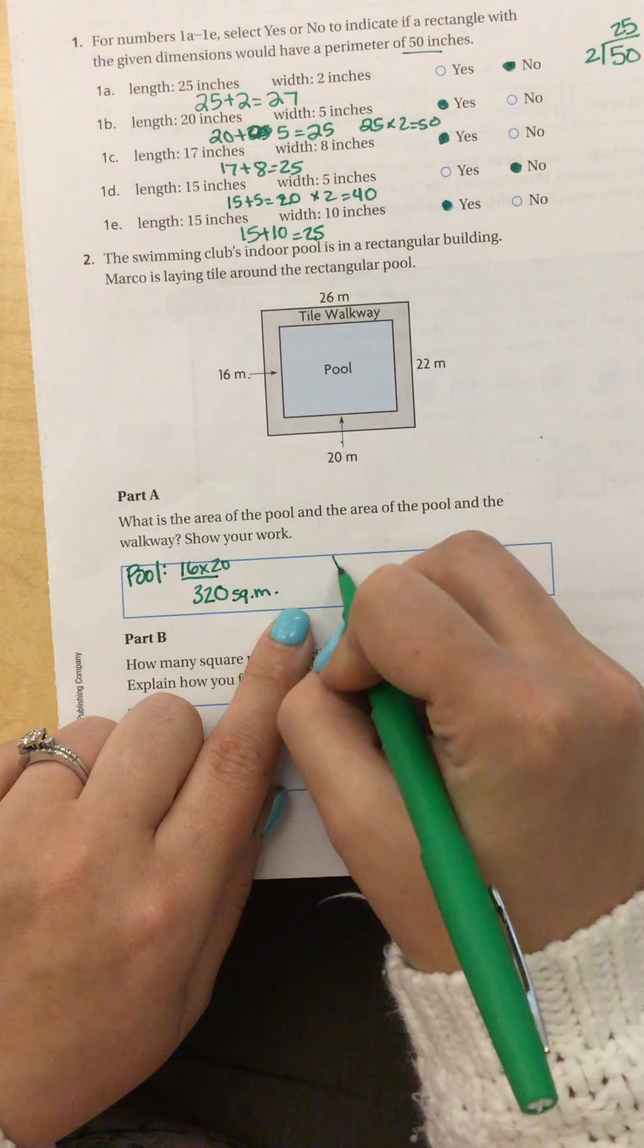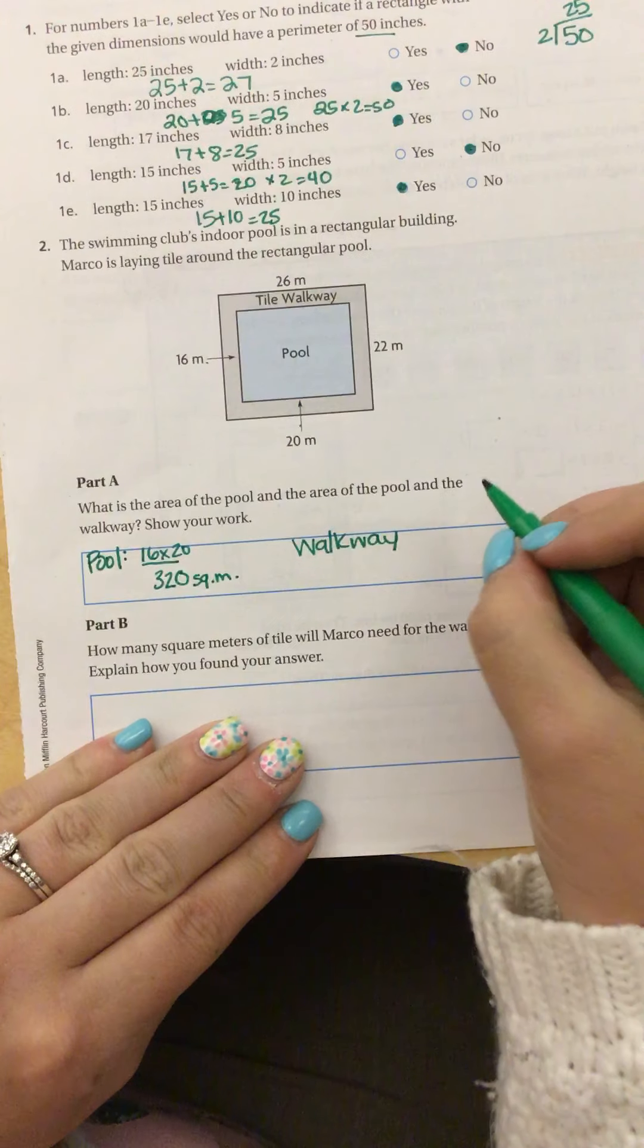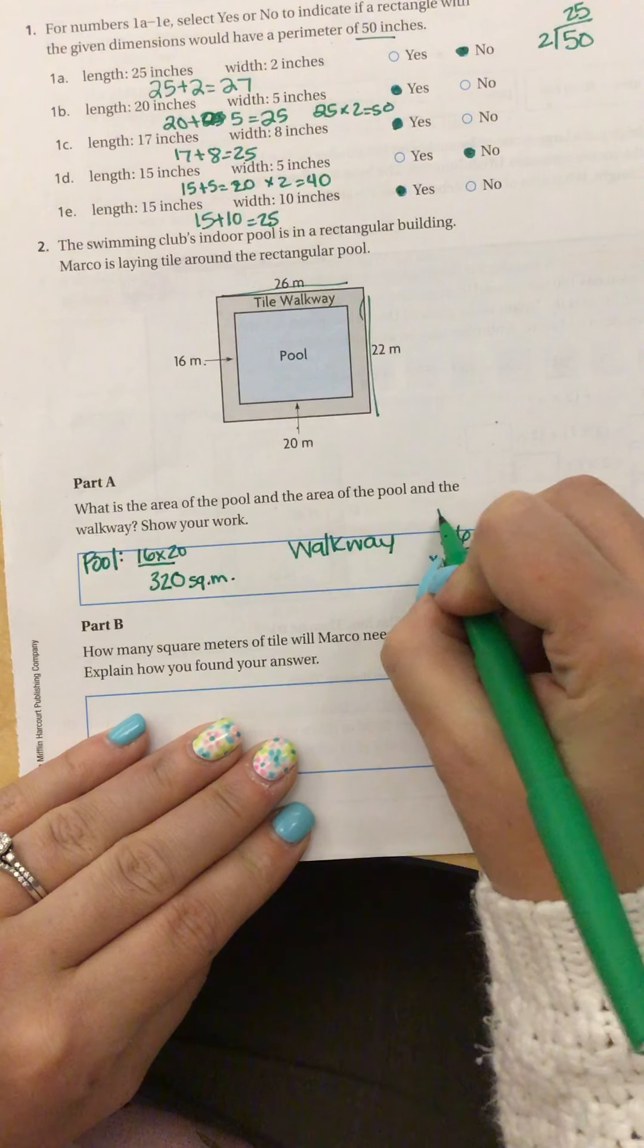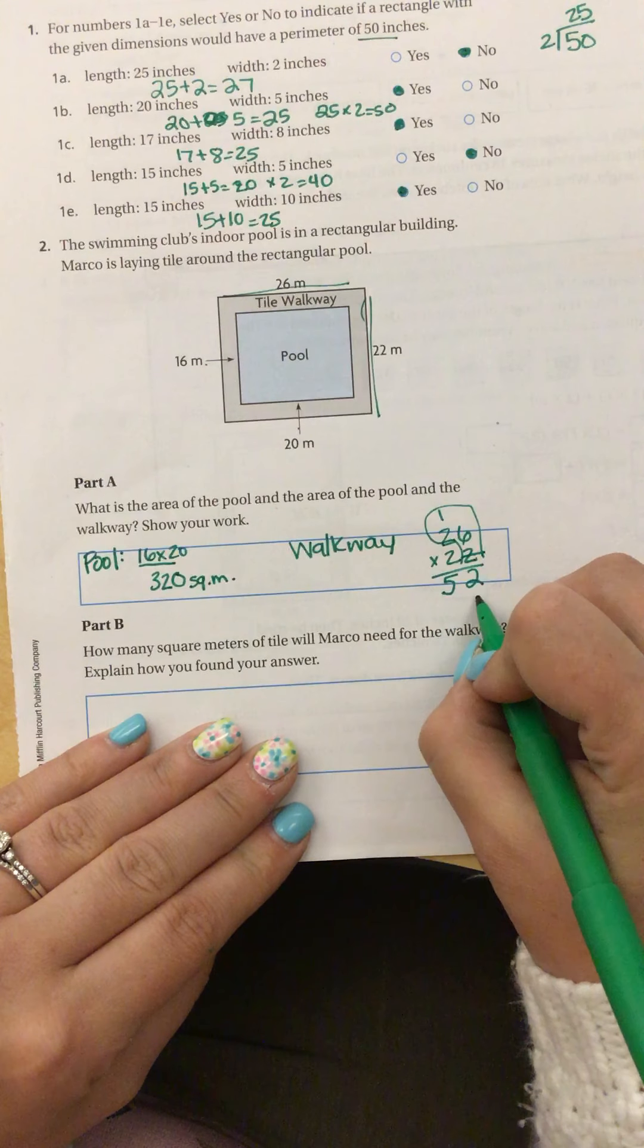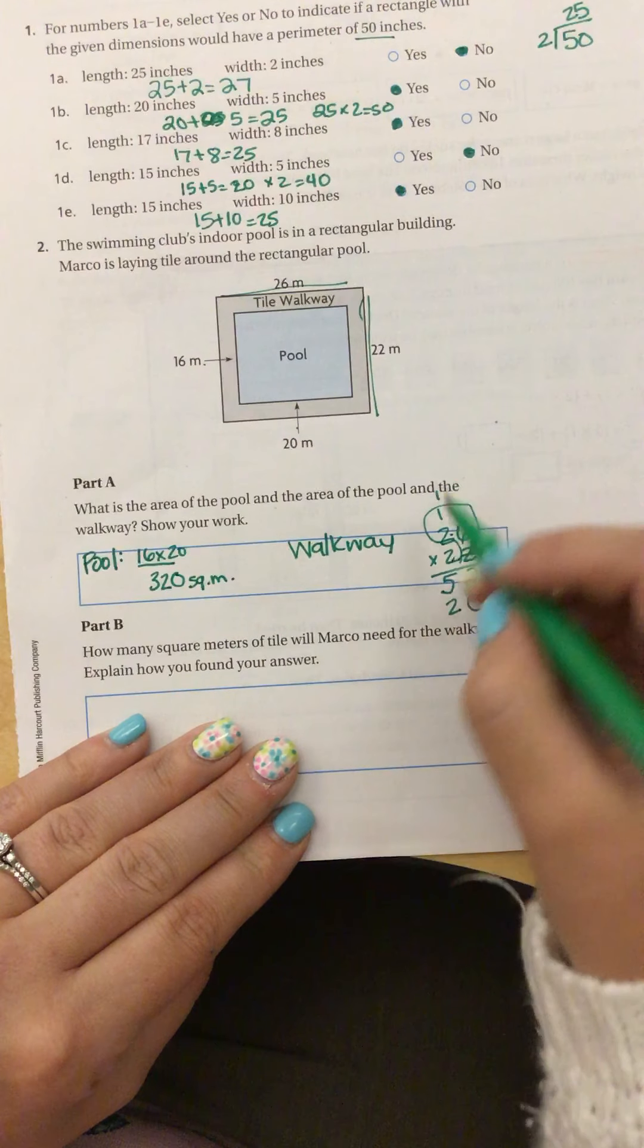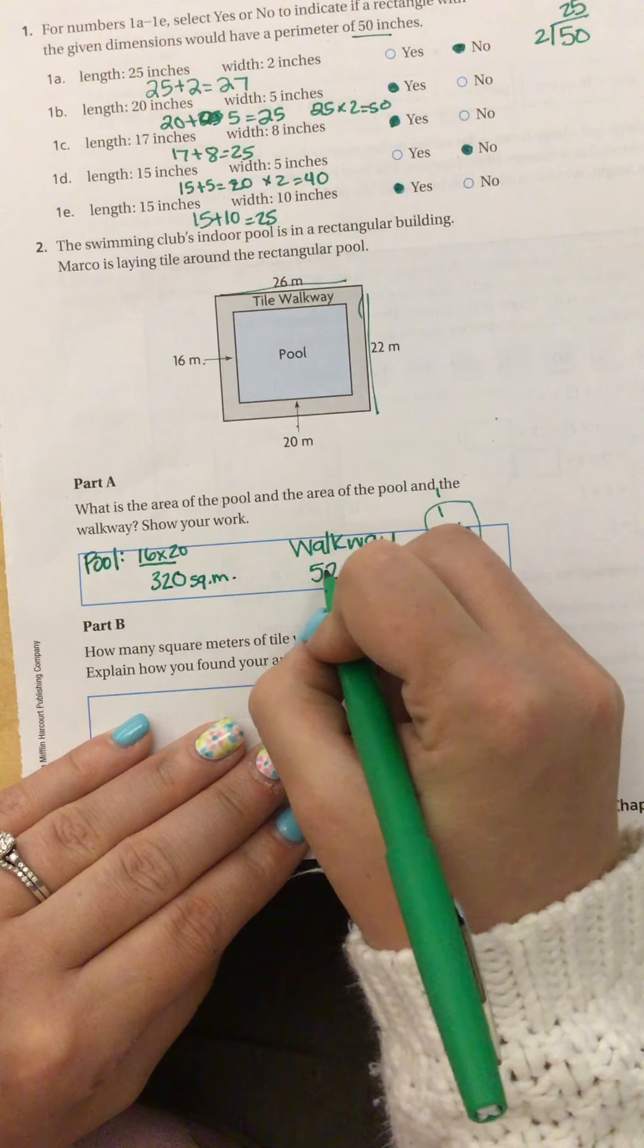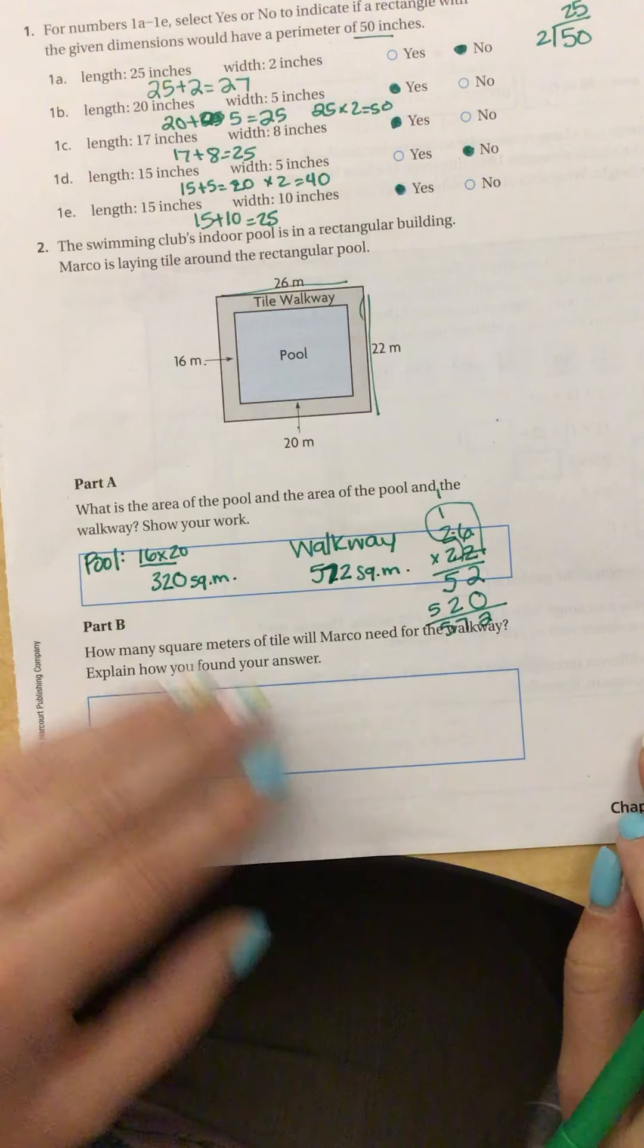And the walkway is 26 by 22. So 26 times 22. 2 times 6 is 12, 2 times 2 is 4 plus 1 is 5. Draw my line. So then we have 0, 2 times 6 is 12, 2 times 2 is 4 plus 1 is 5. When we add those together, I get 572 square meters for the whole thing.